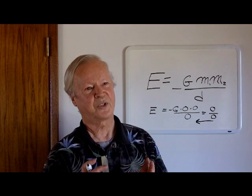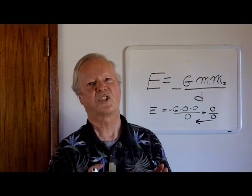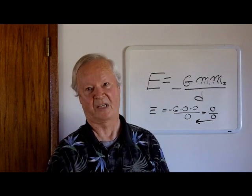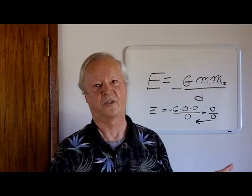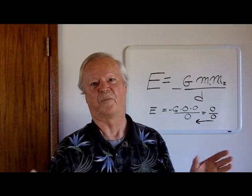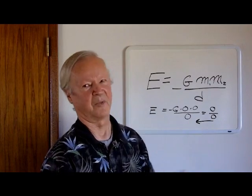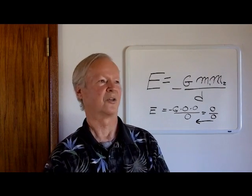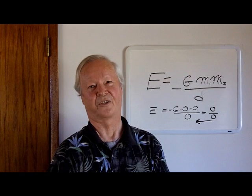And so what happens is that the stable creations remain. All the stuff around us is the stable result of the 0 divided by 0, and the unstable results we don't see because they don't exist for long - they're lost to history.